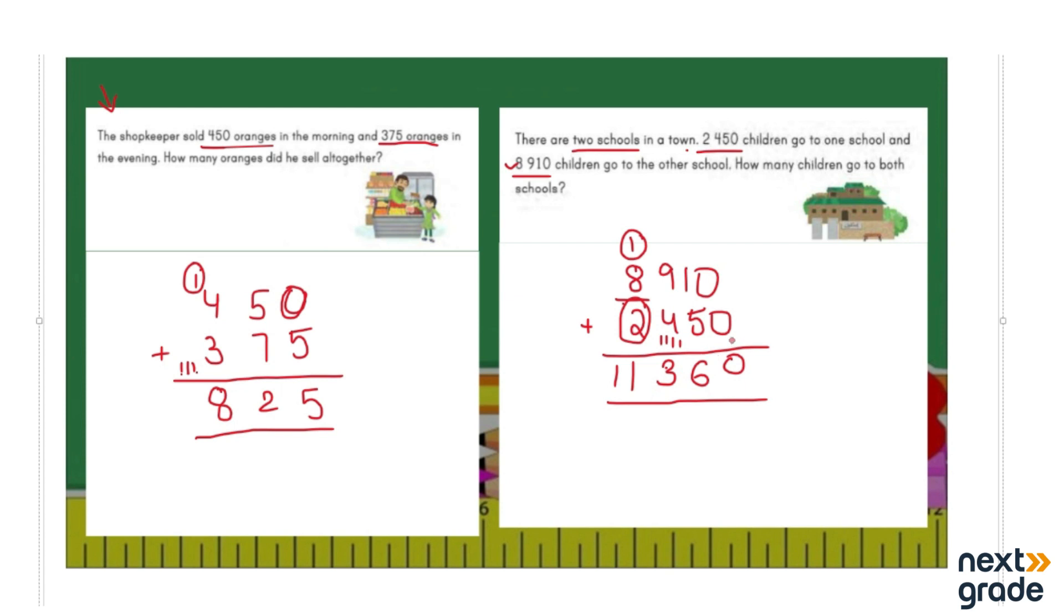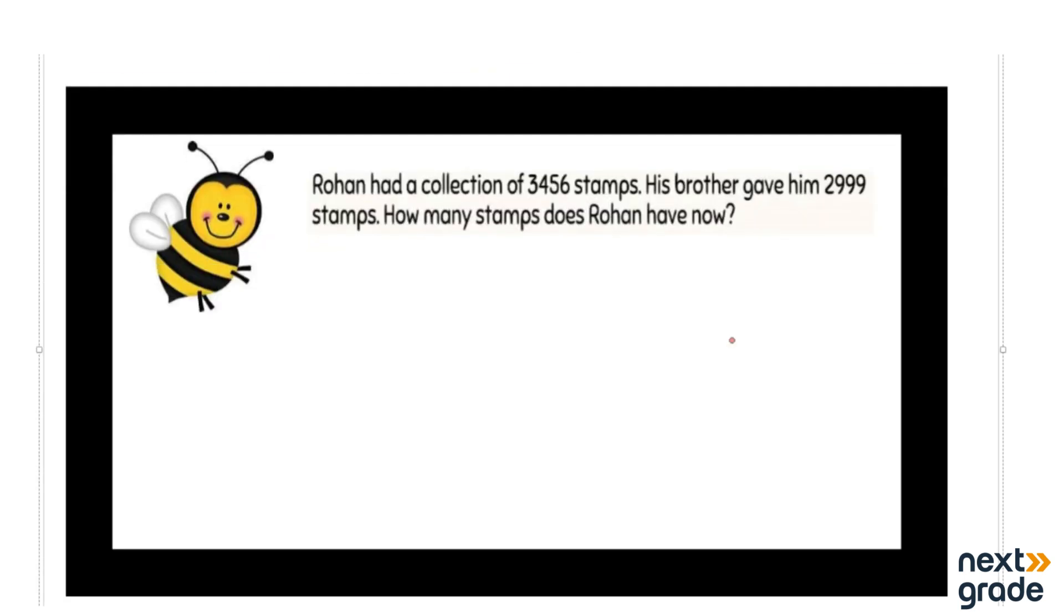All right, now let's move on to the next example in which we are going to discuss 4 digit numbers that are going to be added in 4 digit numbers. Let's read it together. Rohan had a collection of 3,456 stamps. His brother gave him 2,999 stamps. How many stamps does Rohan have now?